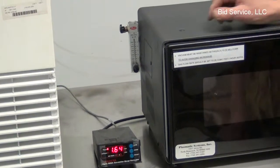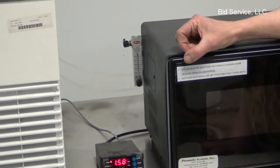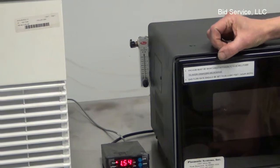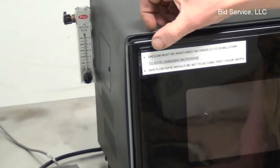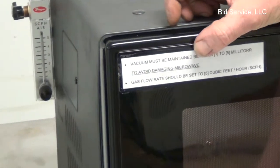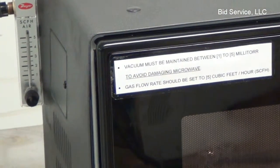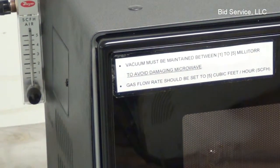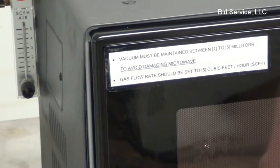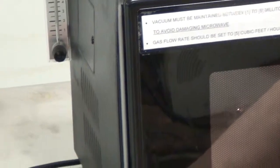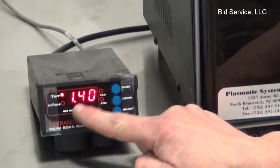Very important: vacuum must be maintained between 1 to 5 millitorr in order to avoid damaging the microwaves. That's very important. So when you are actually exciting a plasma and using it as a plasma etch piece of equipment, you must maintain a vacuum level of between 1 to 5.